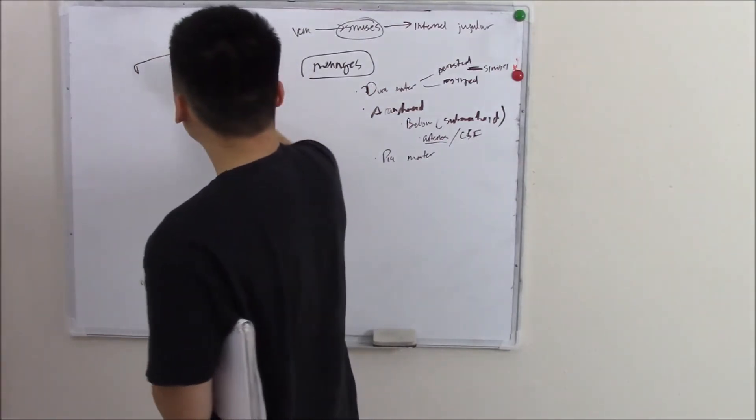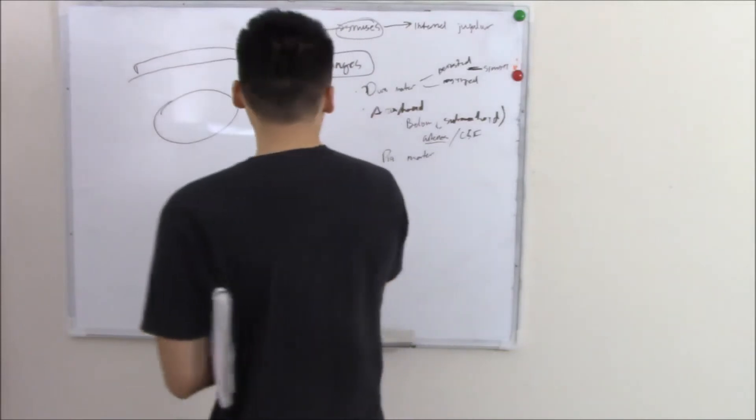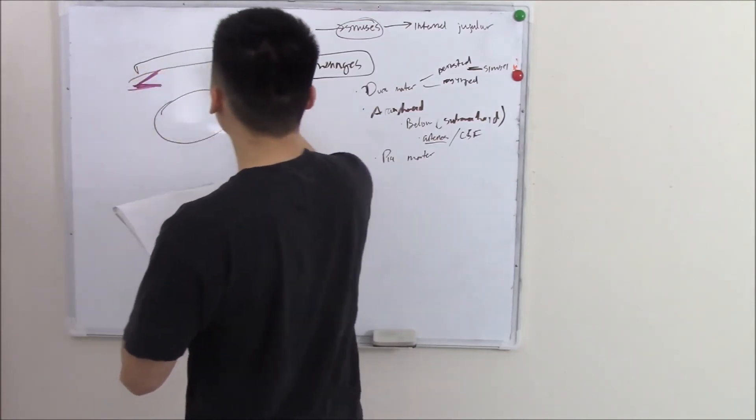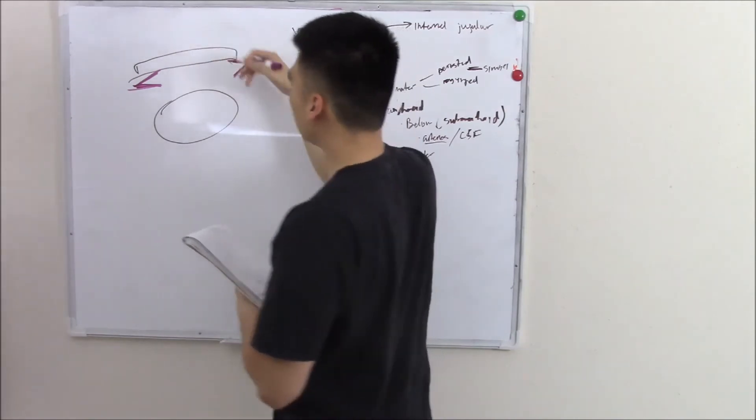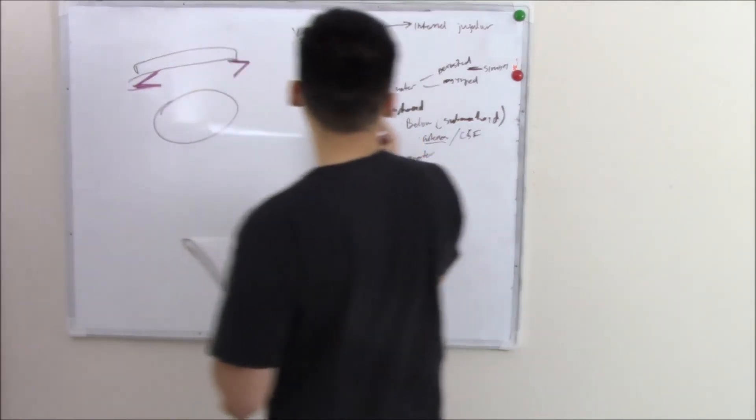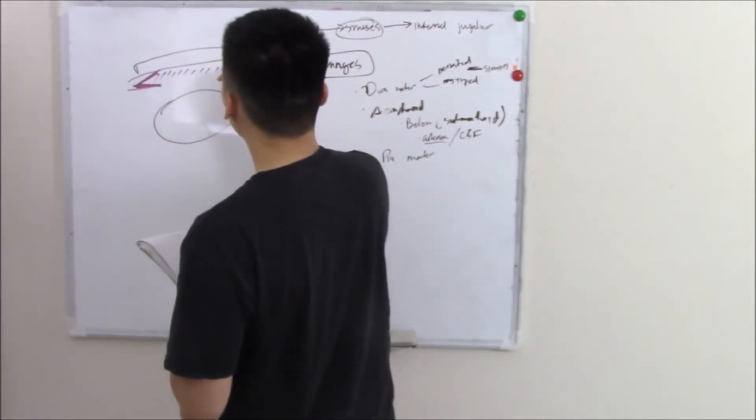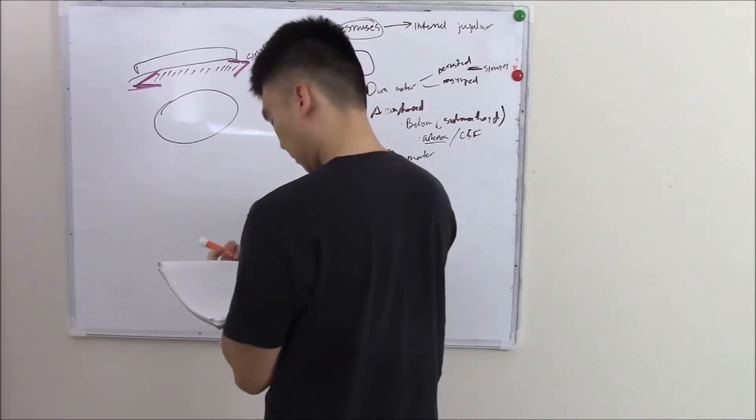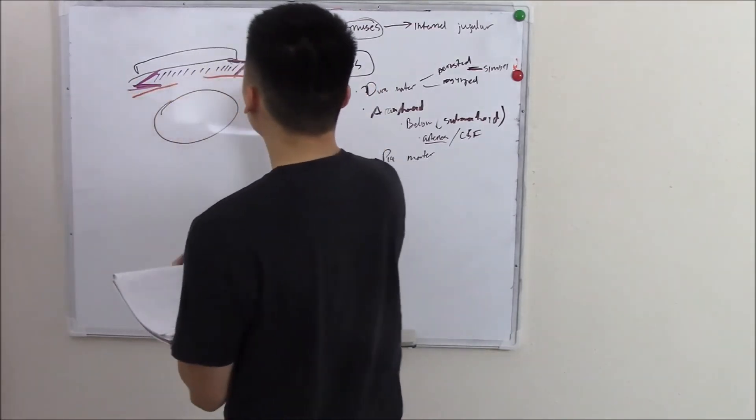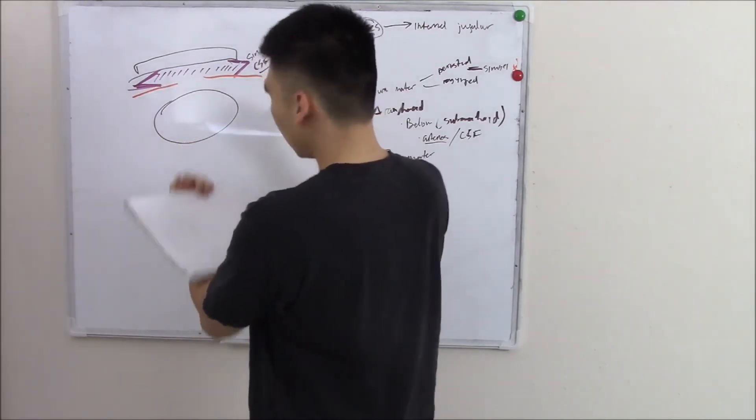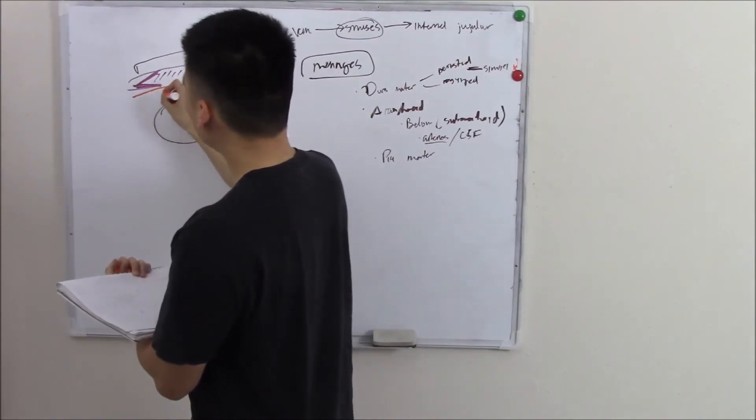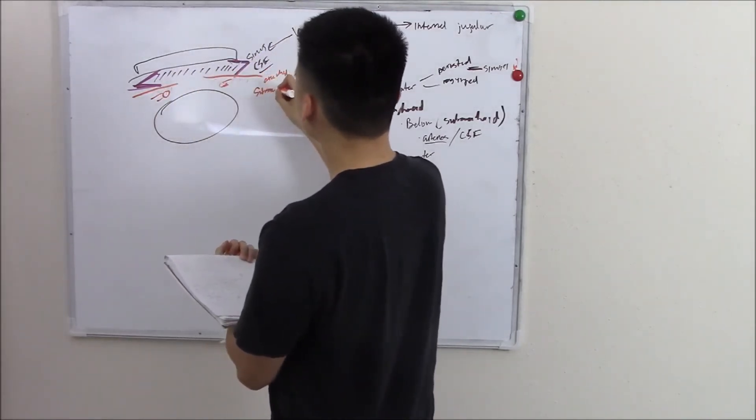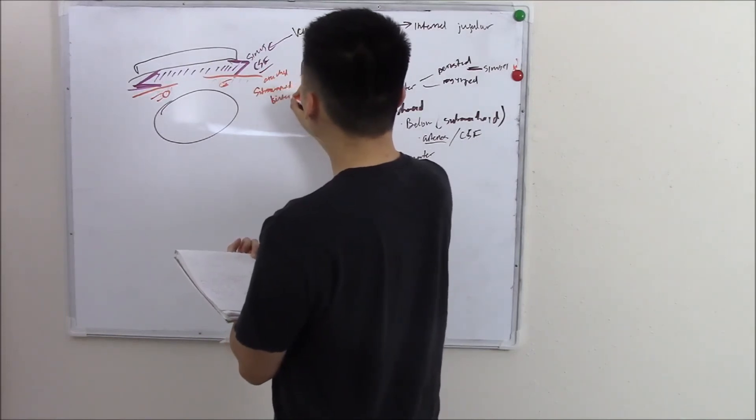So let's just say this is your skull. And this is your brain. The first layer we said was your dura mater. Your dura mater is made up of two layers. The periosteal, which is closest to the periosteum, your bone, and your meningeal, which is closer to your other meninges layers. And in between, we said, is where your sinuses are. And this will drain your veins. And it will also drain your CSF. Underneath is your arachnoid. And we said that below your arachnoid is your subarachnoid space. And this space is where your arteries and your CSF is. So subarachnoid. Artery, CSF.